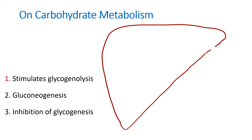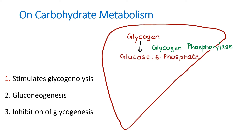In the liver, glucose is stored as glycogen. Glucagon stimulates the enzyme glycogen phosphorylase, which converts glycogen to glucose-6-phosphate. It is then easier to produce glucose from this glucose-6-phosphate. This is the first action of glucagon: stimulation of glycogenolysis.